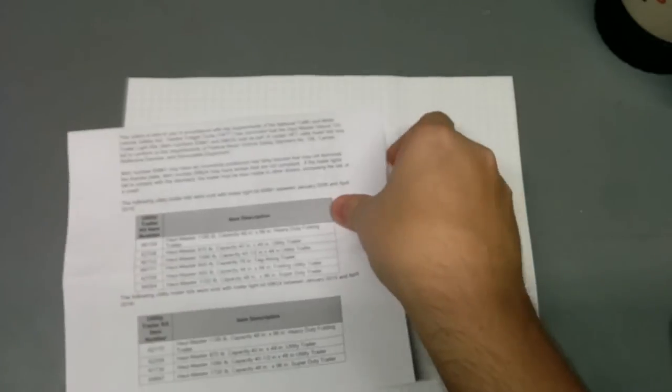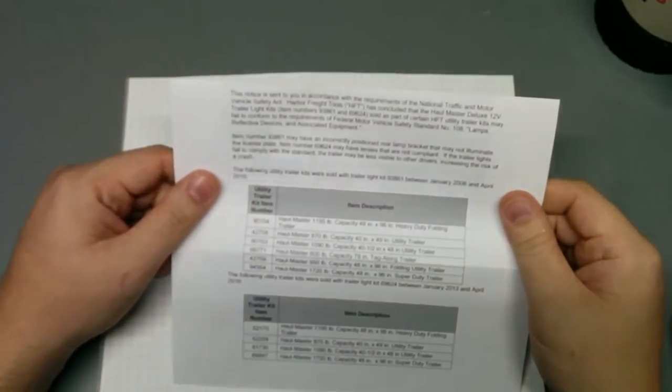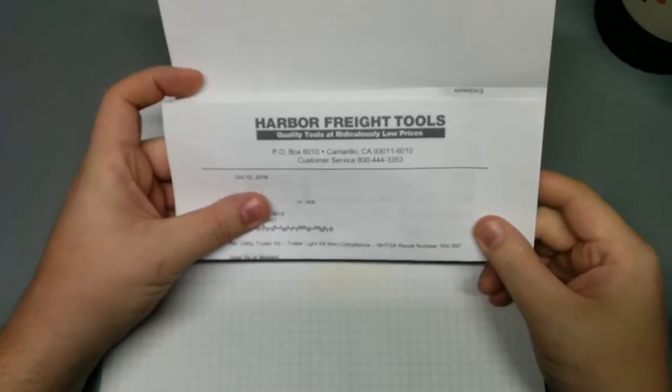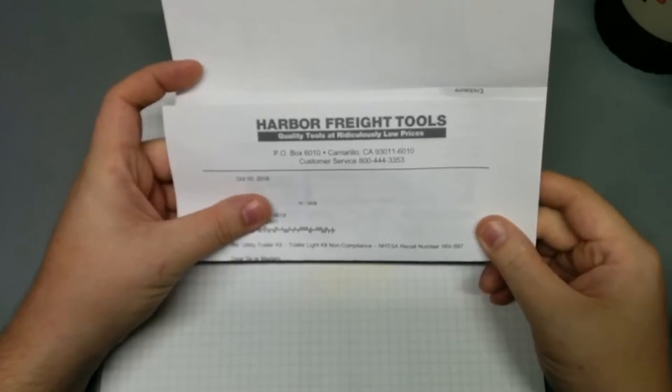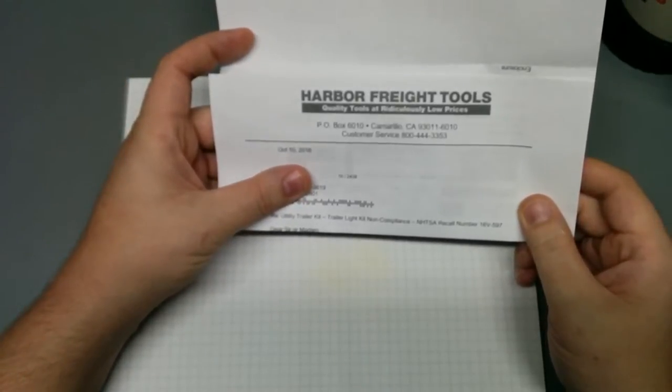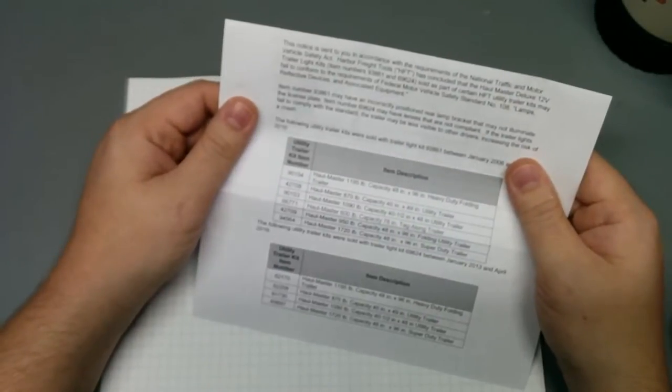So if you bought a Harbor Freight trailer in the last 10 years or so, you probably got a letter in the mail. This was called Utility Trailer Kit, Trailer Kit Light Non-Compliance NHTSA Recall Number 16V597. So it says here item number 69624 may have lenses that are not compliant.